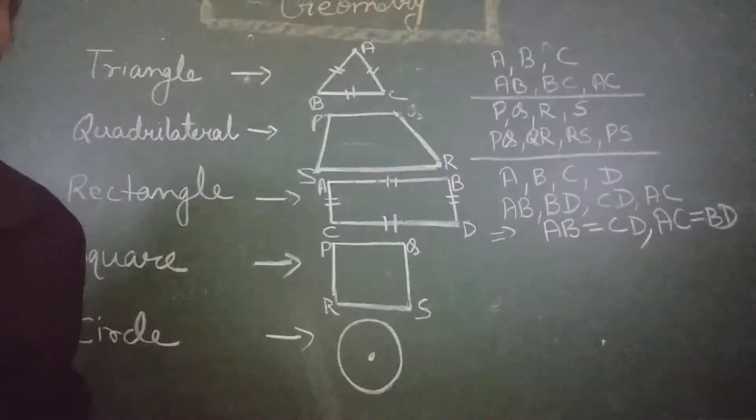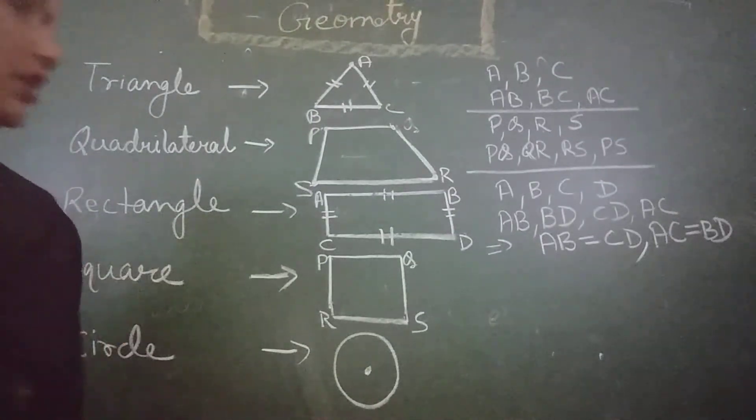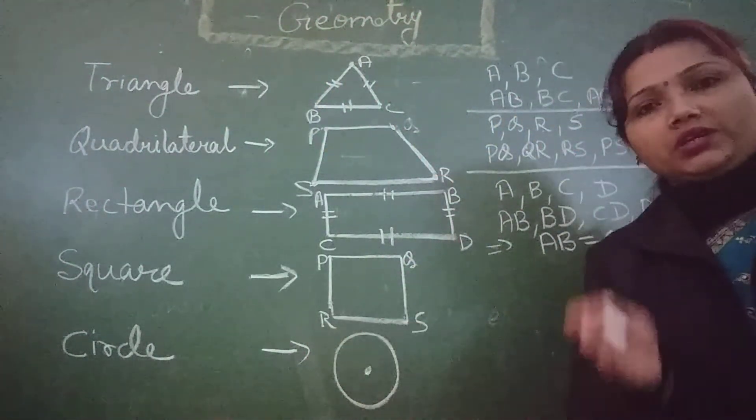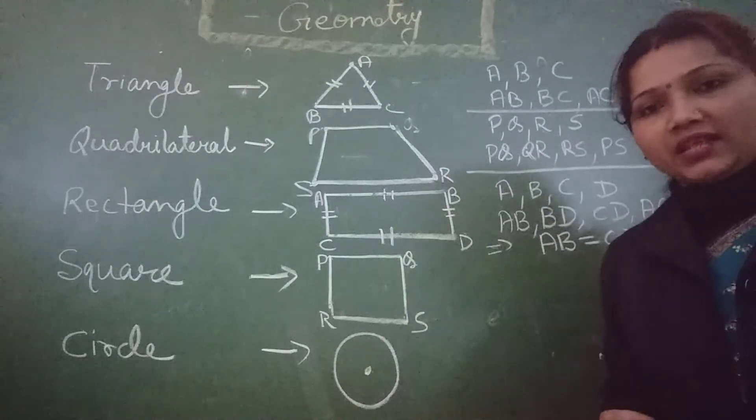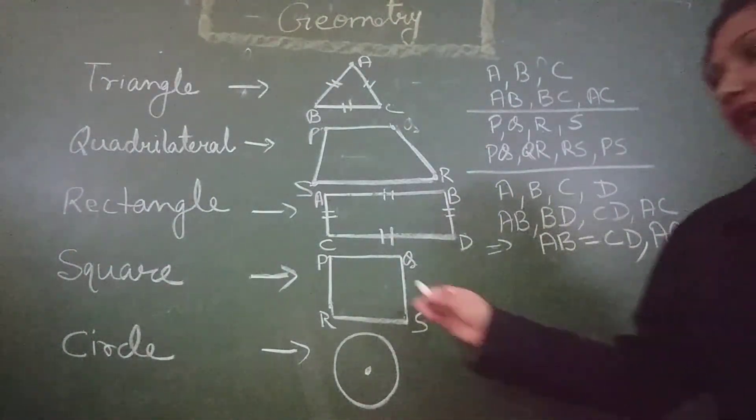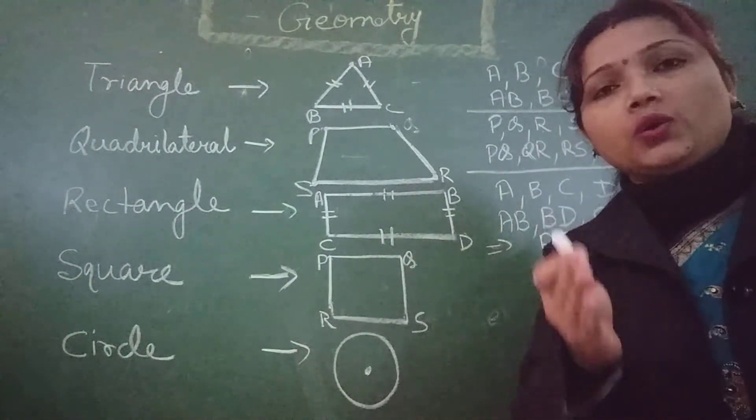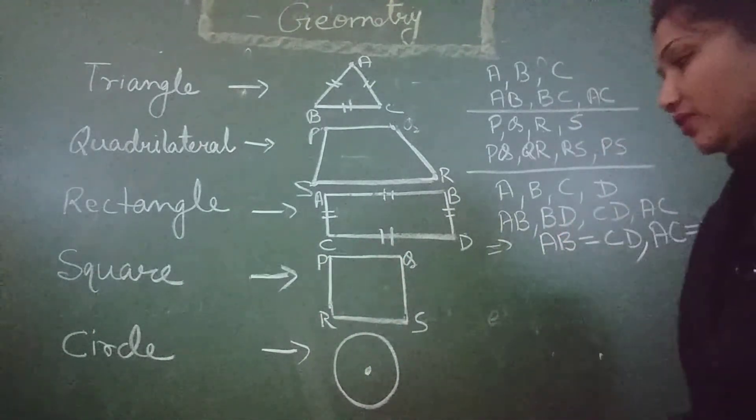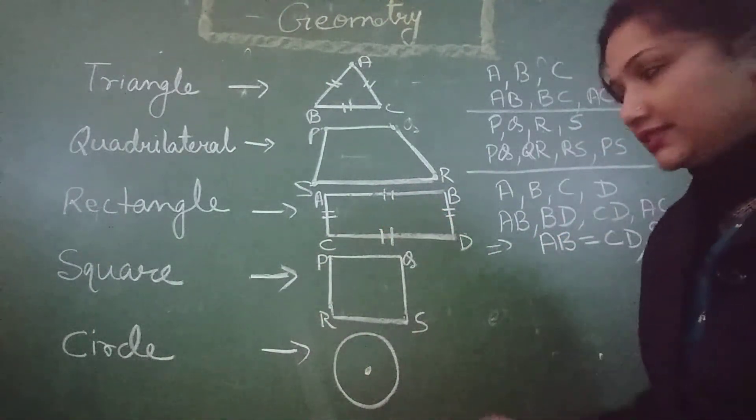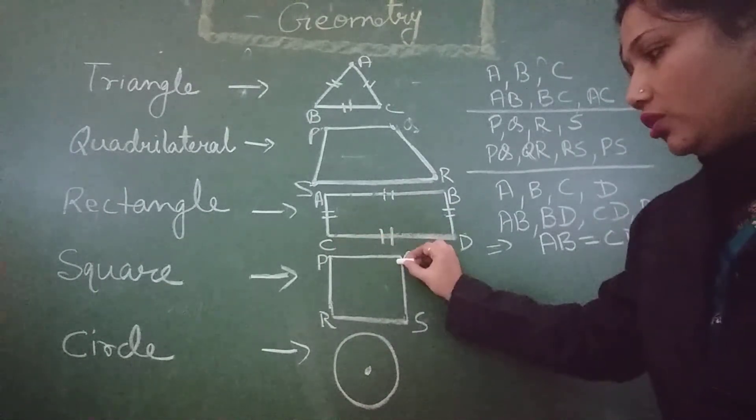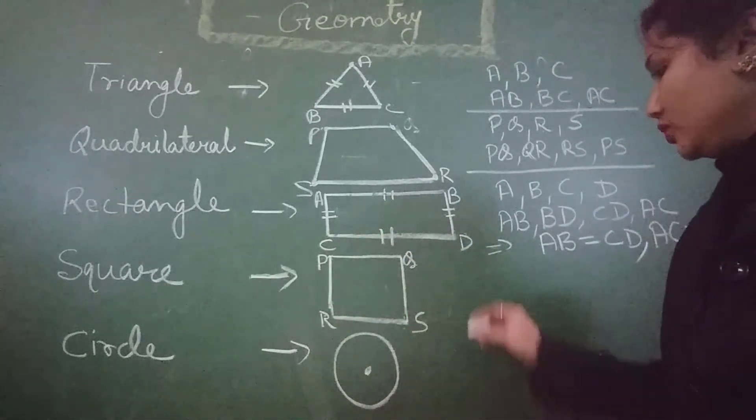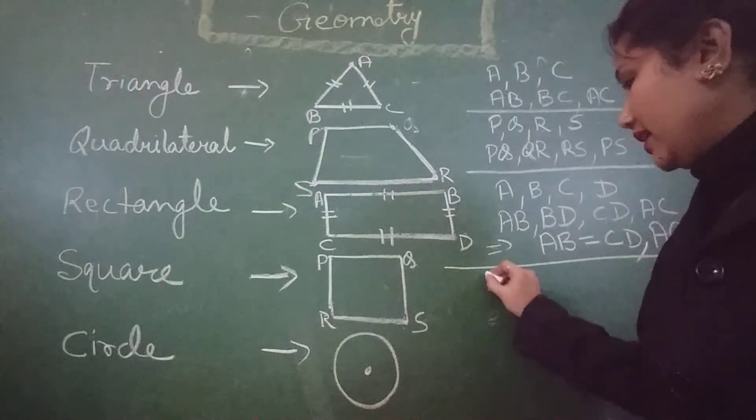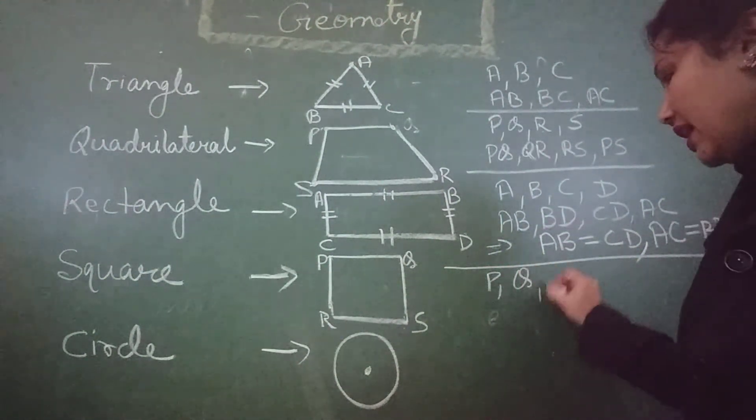Now, see the fourth one. Square. Square is also a quadrilateral. But it has four equal sides. Means, all sides are equal to each other. Again, it has four vertices, four corners, P, Q, R, S. So, here I am writing. The vertices are P, Q, R, S.